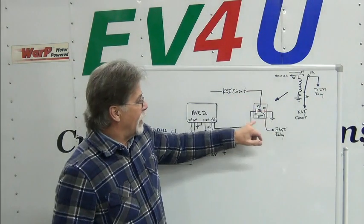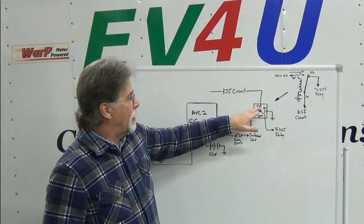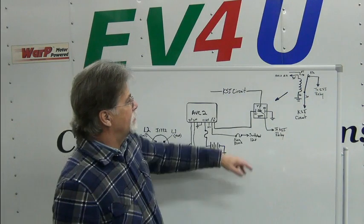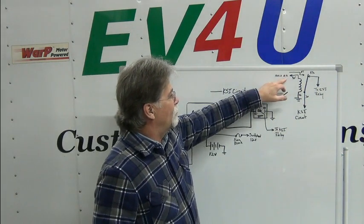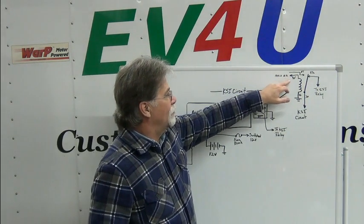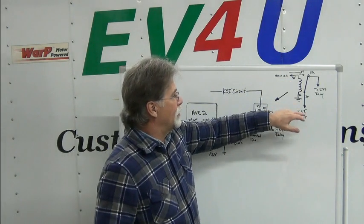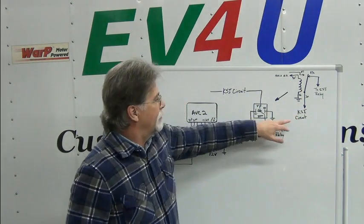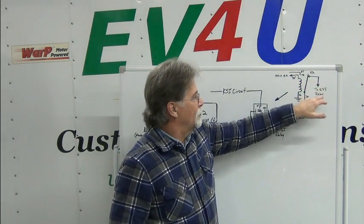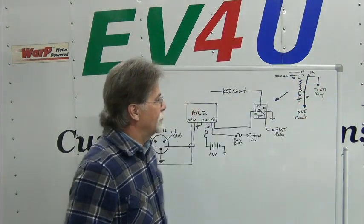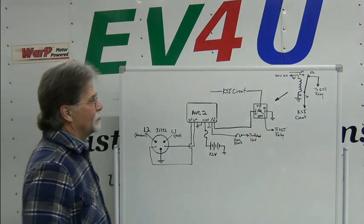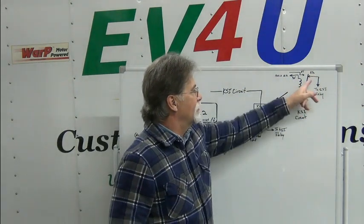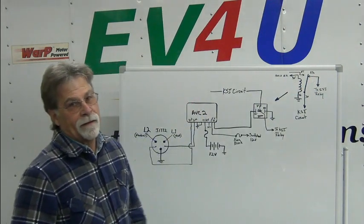This is the standard automotive relay, showing the bottom of it. Here's in schematic form. The normally open from our relay on the AVC-2 is coming into the coil. The other side goes to ground. The common is coming from our KSI relay, goes through the normally closed to the KSI relay. As soon as this is energized, that closes, this opens up, and you're a no-go.